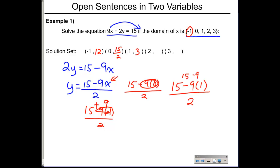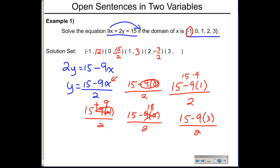For X = 2: (15 − 18) / 2 = −3/2, left as an improper fraction. For X = 3: (15 − 27) / 2 = −12 / 2 = −6, giving solution (3, −6). So we have five solutions given the input domain values of X.